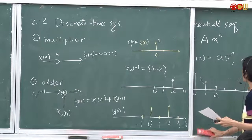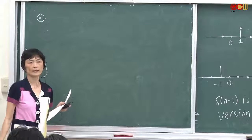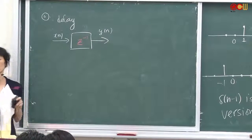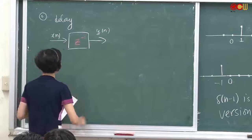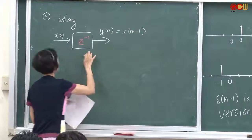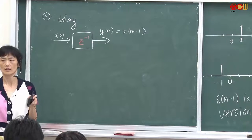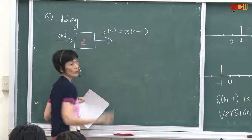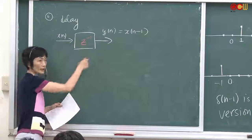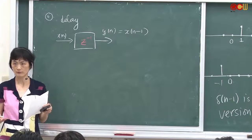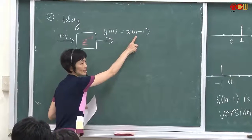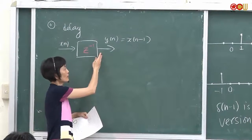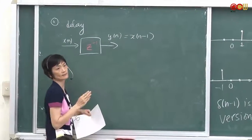We also have a memory — we call it a delay. We use the notation Z with an inverse in the box. Whenever we have Z-inverse in the box, the output at time n is going to be the value of x at n minus 1. This is a memory that stores the value of the input at the previous time instant. The output will be the input of the previous time instant. That's delay.